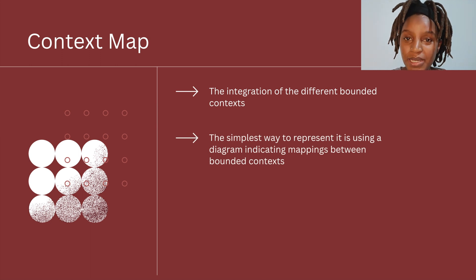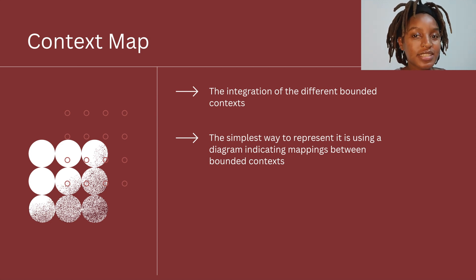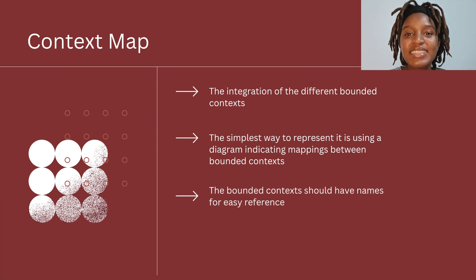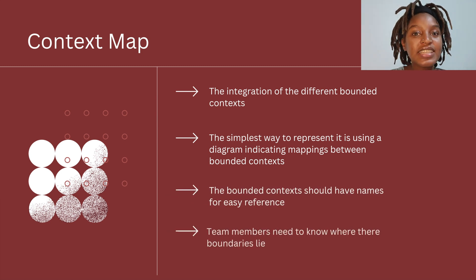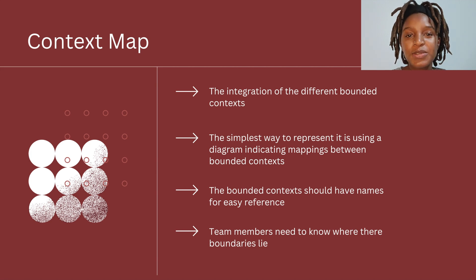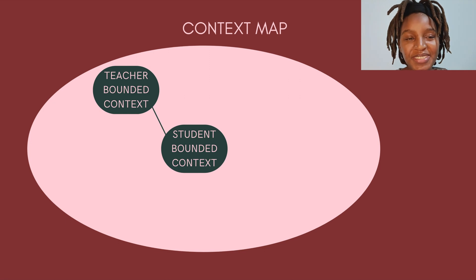The simplest way to represent a context map is using a diagram indicating the mapping between the different bounded contexts. The bounded contexts need names for easy reference, and team members need to know where the boundaries lie. Let's look at examples using the school management system.